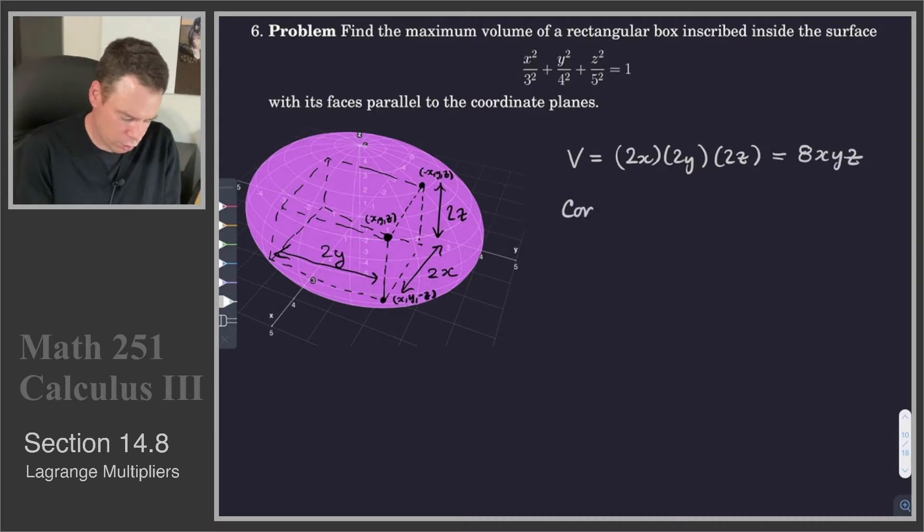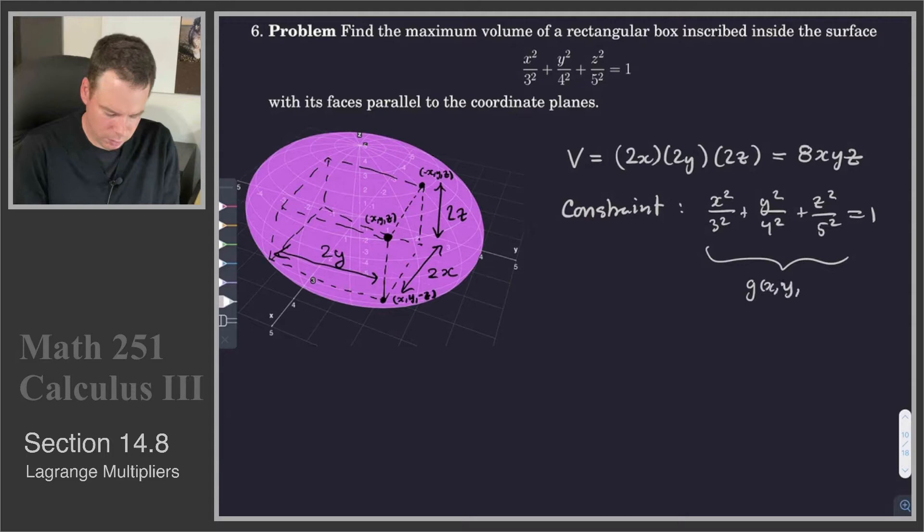What is our constraint? Well, our point (x, y, z) has to live on this ellipsoid. So our constraint is that x²/3² + y²/4² + z²/5² = 1. So we can call this our g(x, y, z).